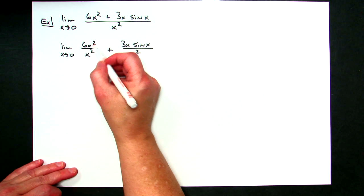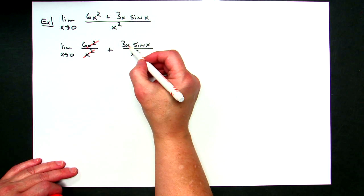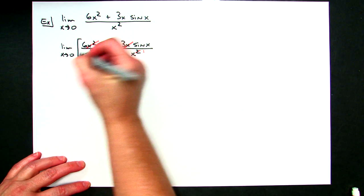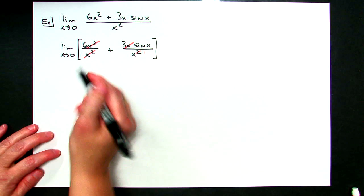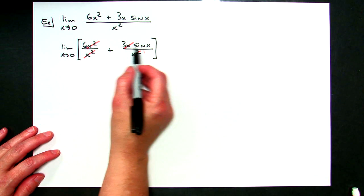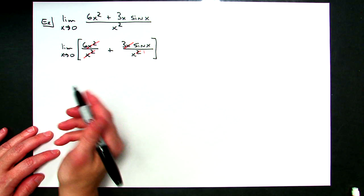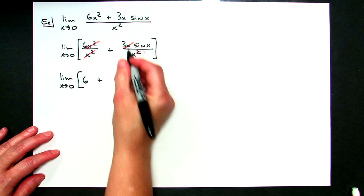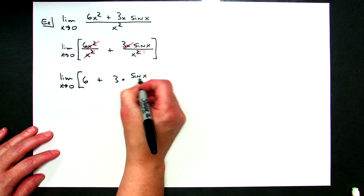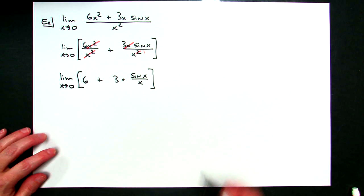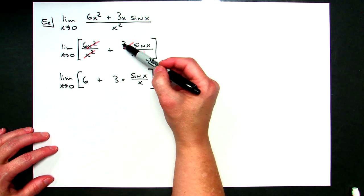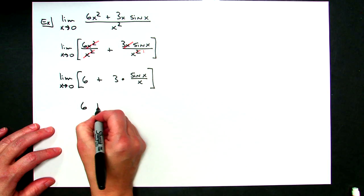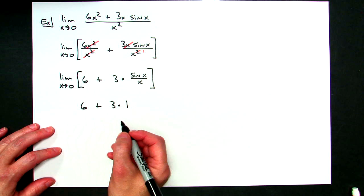I've got x² over x² in the first term, which cancels nicely. In the second term, I have one x on top and two x's on the bottom, so I can cancel one. I'm taking the limit of this entire quantity. The limit of the constant 6 stays as 6, and for the second part I'll separate out 3 times sine x over x. Now I can work this out: the limit of the constant 6 is 6, plus 3 times 1 — since sine x over x goes to 1 — which is 3. That gives a limit of 9.